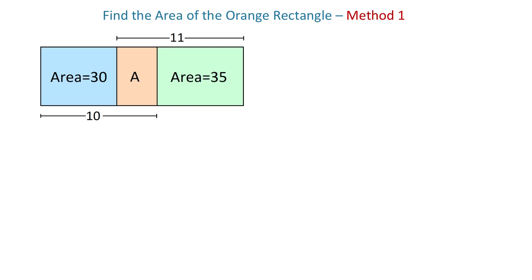Here we have a popular problem where we are given the areas of two rectangles and we have to find the area of the orange rectangle. We will solve this problem using four different methods. The area of the blue rectangle is 30 square units and the area of the green rectangle is 35 square units. The width of the blue and orange rectangles together is 10 units, and the width of the orange and green rectangles together is 11 units. All these rectangles have the same height, represented by the letter H.